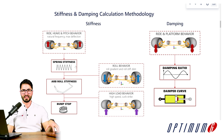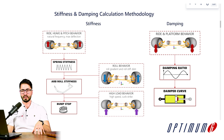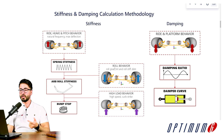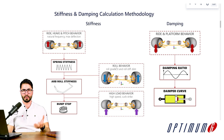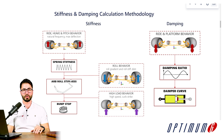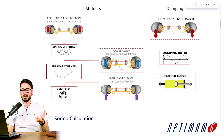Once you have your springs defined, the next step is to determine your anti-roll bar stiffness. In order to achieve that, first you need to have your springs determined, and second, you need to also define what is the roll behavior that you expect from this type of car. For example, what is the roll gradient? What is the roll stiffness distribution? With this information, you are able to calculate your anti-roll bar stiffness.